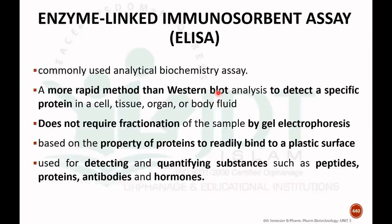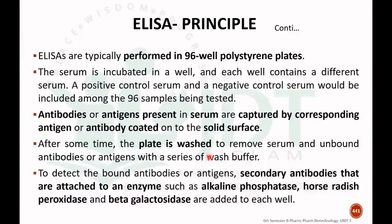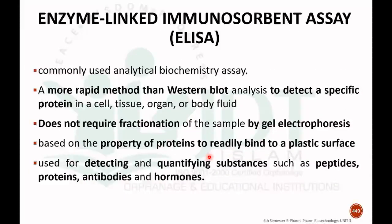One of the advantages of ELISA is that it does not require fragmentation by gel electrophoresis, unlike Southern blotting or Western blotting. It does not require fractionation of the sample by gel electrophoresis. ELISA is based on the property of proteins to readily bind to plastic surfaces, and the technique is usually performed in micro polystyrene plates or micro wells.